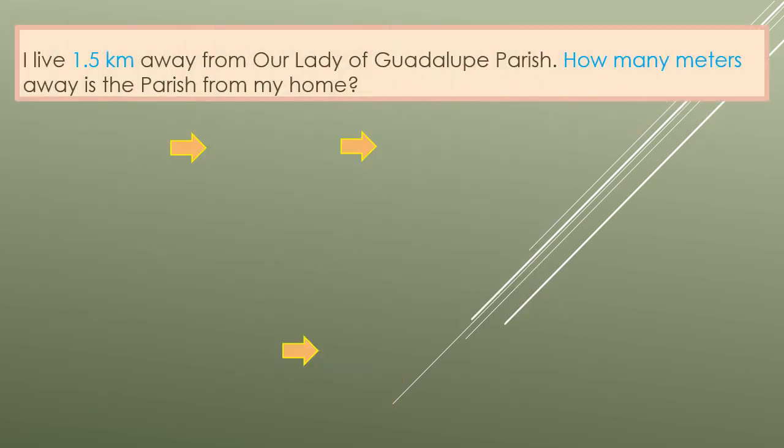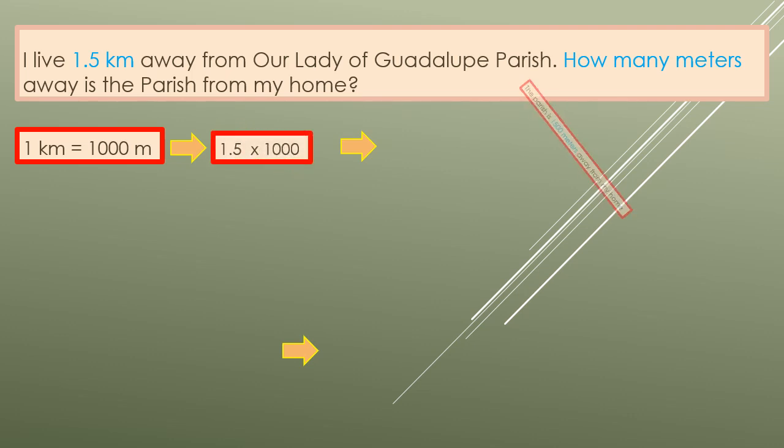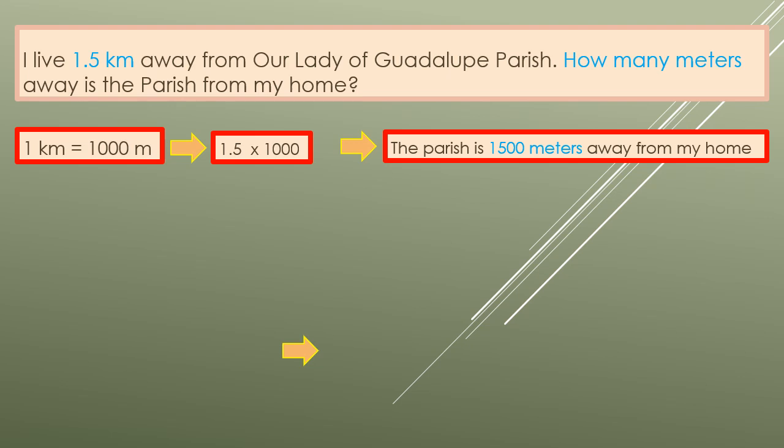For our next example, I live 1.5 kilometers away from Our Lady of Guadalupe Parish. How many meters away is the parish from my home? If you understand the problem, we are just asked to convert 1.5 kilometers to meters. That's the given. The thought we should have is one kilometer equals 1,000 meters. So what do we do? 1.5 times 1,000, and that will give you 1,500 meters, or the parish is 1,500 meters away from my home.